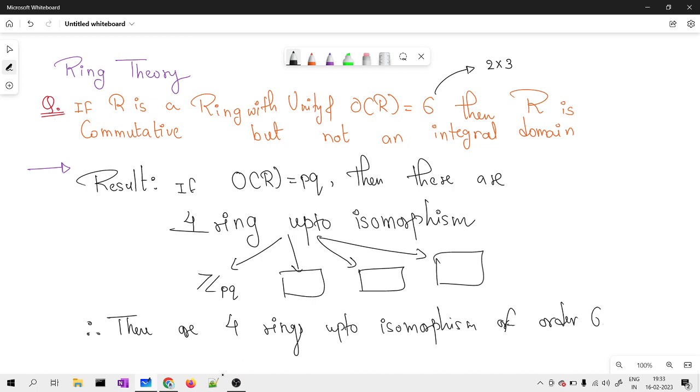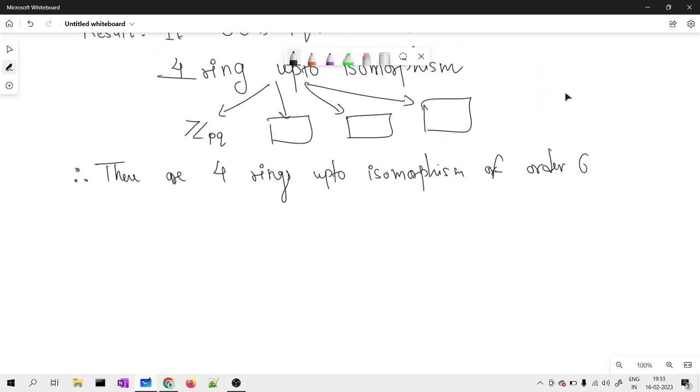Now, as I said, these are nothing but the rings. Out of these four rings, there is only one ring which has unity. Can you tell me what could be the name of that ring? Out of which, only one ring has unity.